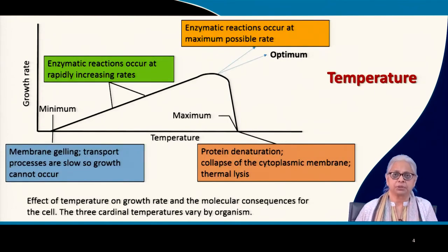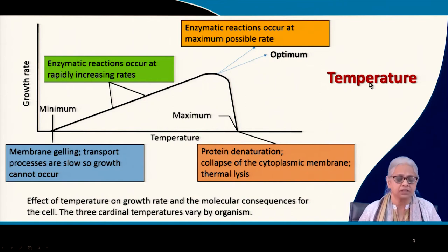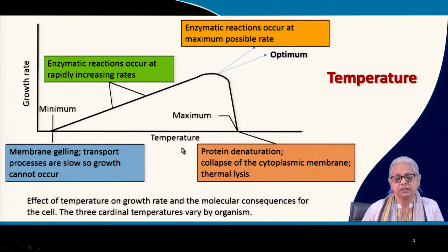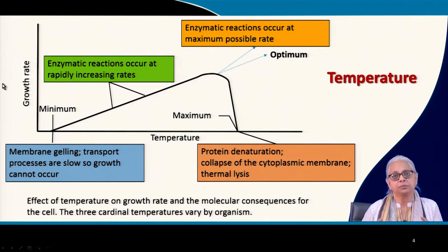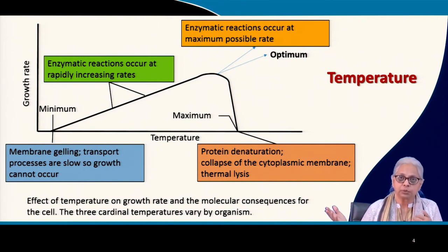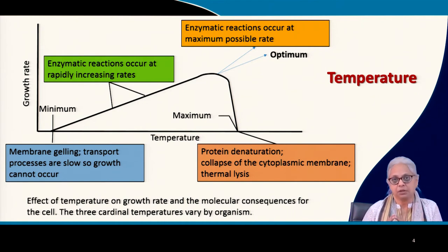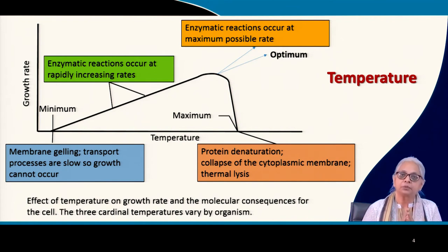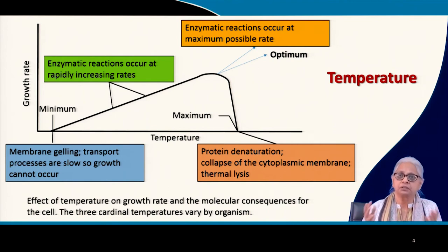Let's take a look at temperature and how it makes a difference to the growth of bacteria or any other organism. What you see here is a schematic showing the relationship between temperature and growth rate. We know from experimental proof that when you increase the temperature, the rate of growth will increase up to a particular point. From chemical kinetics and Arrhenius' law, when you increase the temperature, the rate of the chemical reaction increases.